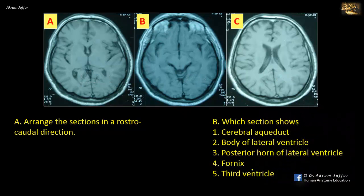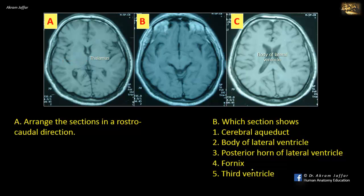Arrange the sections in a rostrocaudal direction. These are axial MRI sections. A is at the level of the interventricular foramen, which communicates between the lateral and third ventricles. The section shows the thalami on either side of the third ventricle. C shows the body of the lateral ventricle, in which the thalamus forms a floor. Thus, it must be at a higher level than A. B shows the midbrain, which is located below the thalamus, and is thus at a lower level than A.